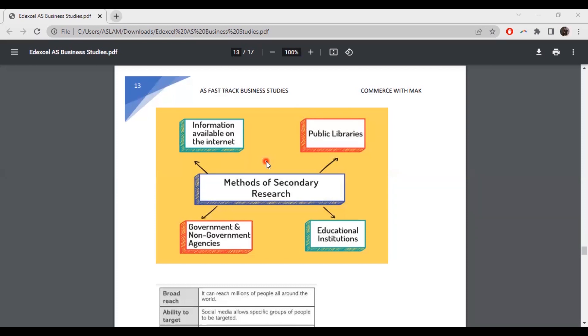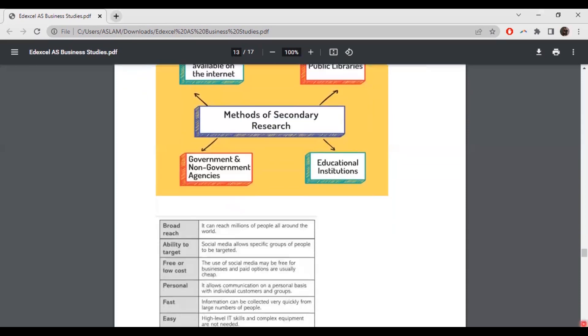Secondary research is cheap compared to primary. You don't spend to the level of primary market research, but you do spend in secondary research too. There are four things that are taken from this information. Secondary research, you can take information from the internet, public libraries, educational institution researchers, and government and non-government agencies. Now you can see here, this type of research is carried out by government also. So these information are already available when you are making a research.